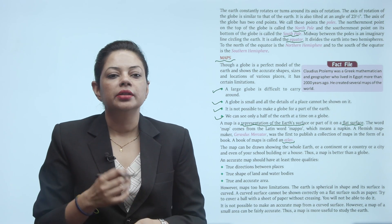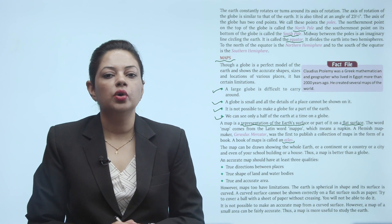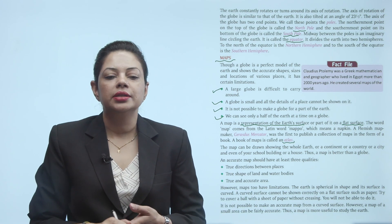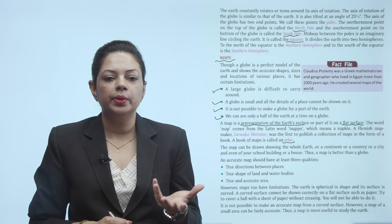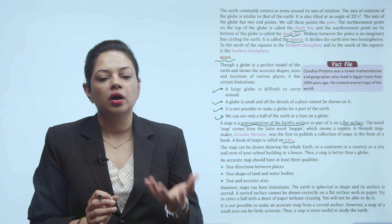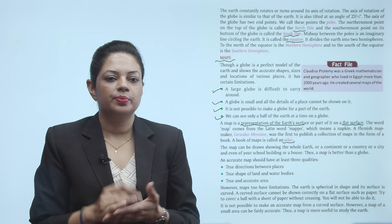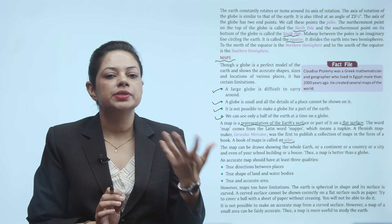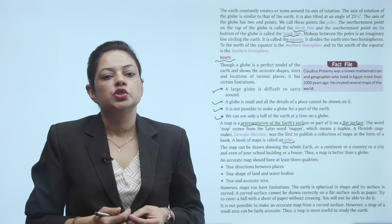The map can be drawn showing the whole Earth, or a continent, or a country, or a city, and even of your school building or a house. Thus a map is better than a globe. Ek map par hum koi bhi Earth ka koi bhi part show kar sakte hain — koi bhi continent, country, city, even apne ghar ki building, apne school ki building — sab cheezein hum map par show kar sakte hain. Isliye globe se better hai maps study karna.